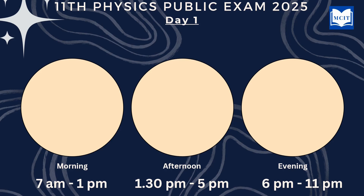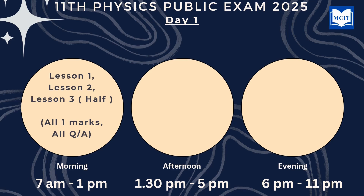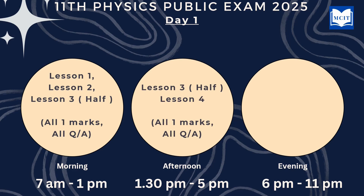In the morning, from 7 o'clock to 1 o'clock, you will learn lessons 1, 2, and 3. Lessons 1 and 2 are fully covered — all 1-mark questions, short answers, and big answers. Then, after a 1-hour break, from 1:30 to 5 o'clock, you will learn lesson 3 fully with all 1-mark questions and question answers. In the evening, you will cover lesson 6 and lesson 9 — all 1-mark questions, short answers, and big answers. This is day one.